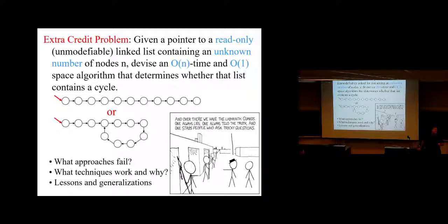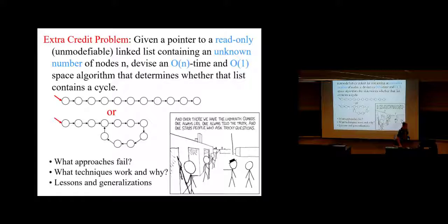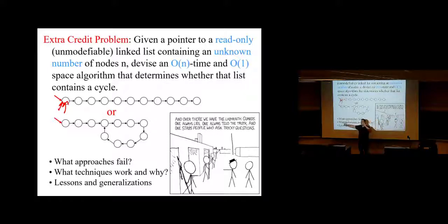Could you put two pointers offset from each other so that they wind up lapping one another, and use that to detect a cycle? You could — by doubling the speed. You start two pointers and keep advancing them. You advance one pointer one at a time and the other pointer two at a time — one is moving twice as fast as the other. If the list is of the first kind, one will reach the end and you're done.